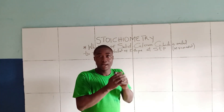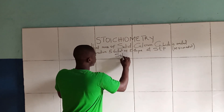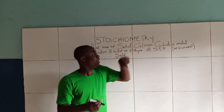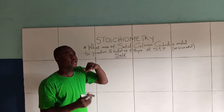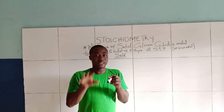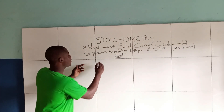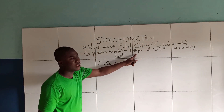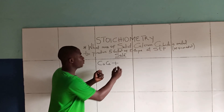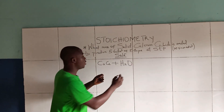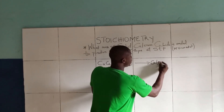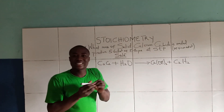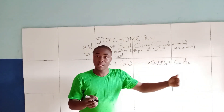Now seeing this question is actually very easy, but you just need to know some concepts. The question asks what mass of solid calcium carbide is required to produce 5.6 dm³ of acetylene. As a student you need to understand the reaction. Solid calcium carbide reacts with water, H₂O, to give calcium hydroxide and acetylene, C₂H₂. Acetylene belongs to the family of alkynes.